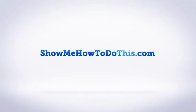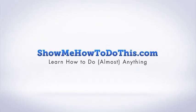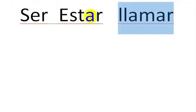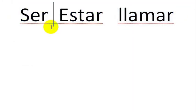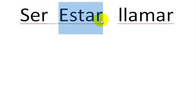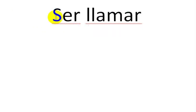There are three verbs that come into play here: ser, estar, and llamar. Ser and estar both mean 'to be,' and they're used in different situations. Ser is used when something is more permanent, and estar is used when something is more temporary. Since your name is relatively permanent, unless you decide to legally change it, we're going to get rid of estar here.